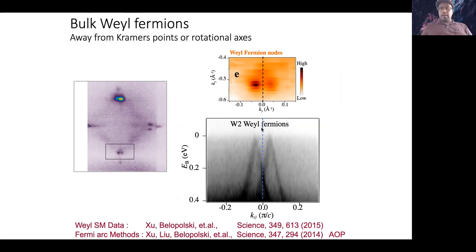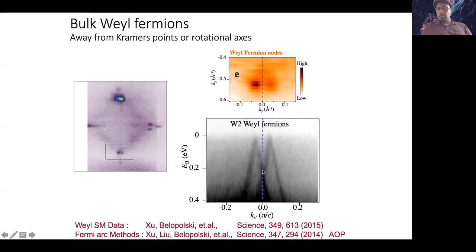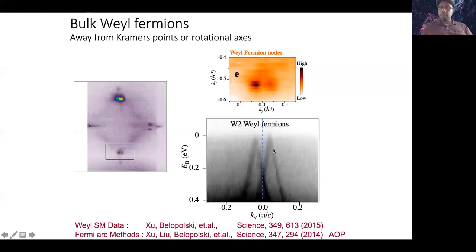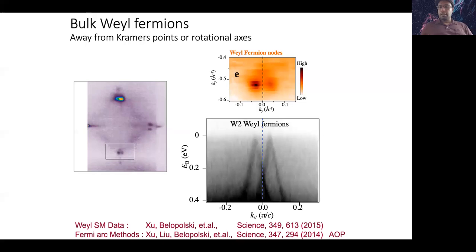We see parallel edge modes. Looking at the bulk with high photon energy, ignoring the surface, the effective Fermi surface looks like two points — then looking down in energy you see those are the tips of a split Dirac cone. Doing spin measurements, they are non-degenerate: there was a Dirac cone in some material parameter space, and when you broke symmetry, it split into a pair of Weyl nodes. These are non-degenerate. We then combined the chiral edge modes and split Dirac cone into a single picture using experiment alone.